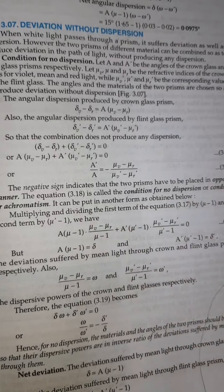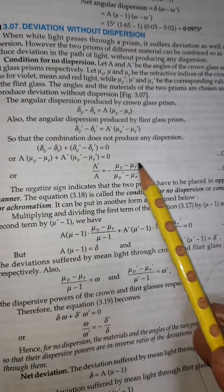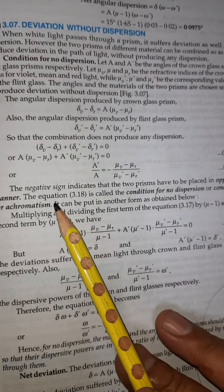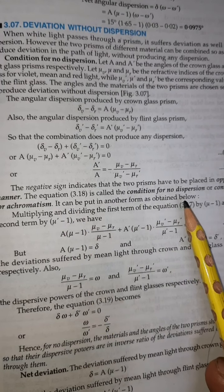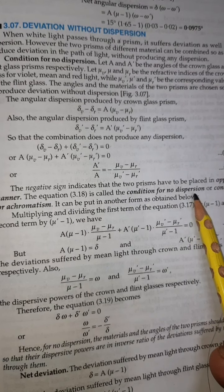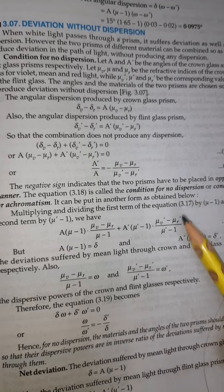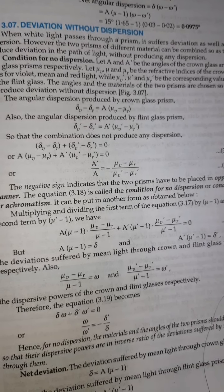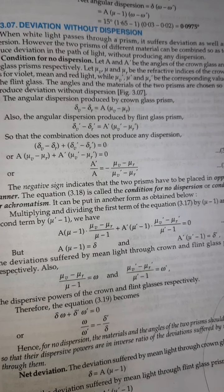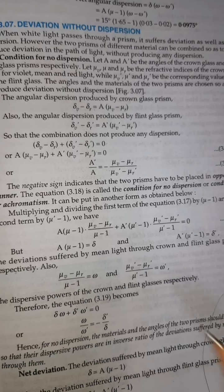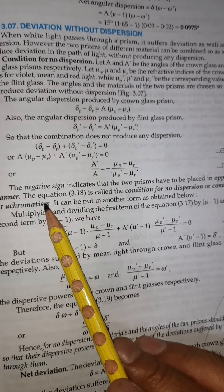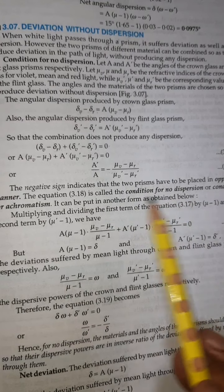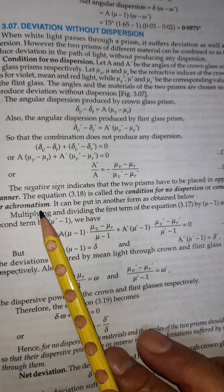The prisms should be placed opposite to each other for this condition. This is called achromatism — no dispersion. White light is incident and white light emerges, so this is the condition for achromatism, meaning no color separation.